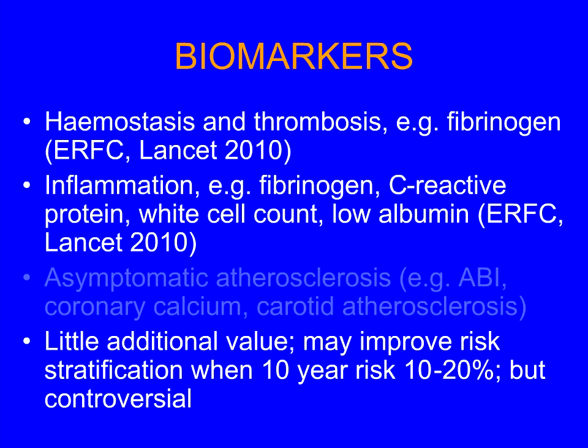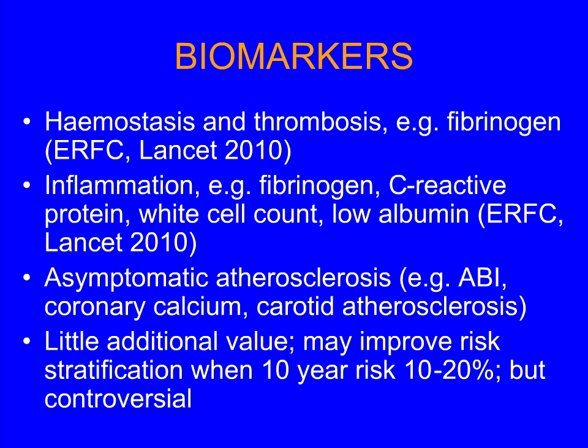Another type of biomarker, apart from measuring circulating levels of inflammation or thrombosis, is to try and study asymptomatic atherosclerosis. That is probably done most simply by measuring blood pressure not only in the arm but at the ankle. The ankle brachial index is quite a nice measure of asymptomatic lower limb atherosclerosis. It's been shown that if you have an ABI of less than 0.9, indicating asymptomatic atherosclerosis of the leg, that gives you a relative risk of 4 — which is quite strong, but not sufficient to make any difference to clinical management.